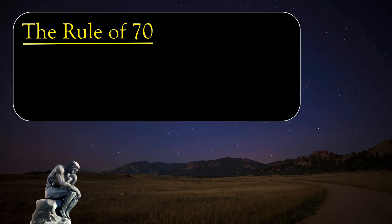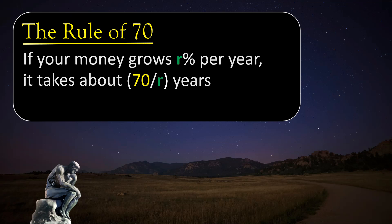In the next few minutes, I will explain what the Rule of Seventy says, why it is important, and, for those with the math to follow it, why the rule actually works. So, the Rule of Seventy says that if your money grows by r% per year, and that r% could be an interest rate in a savings account, or the return on an investment, or whatever, then it takes about 70 divided by r years for your money to double. As you'll soon see, this is a powerful little rule of thumb.